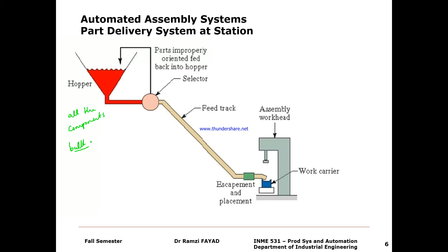This means that parts are initially randomly oriented at this step. The next step is the selector. The selector's job is literally to select or orient — this element of the delivery system establishes a proper orientation of the component for the assembly work head. A selector works as a filter, permitting only parts in the correct orientation to go through to the feeder track.